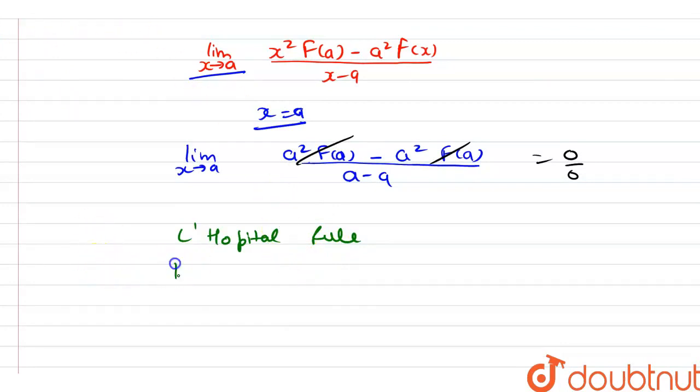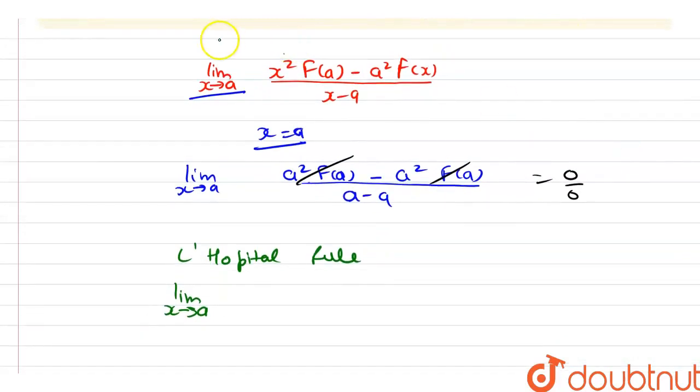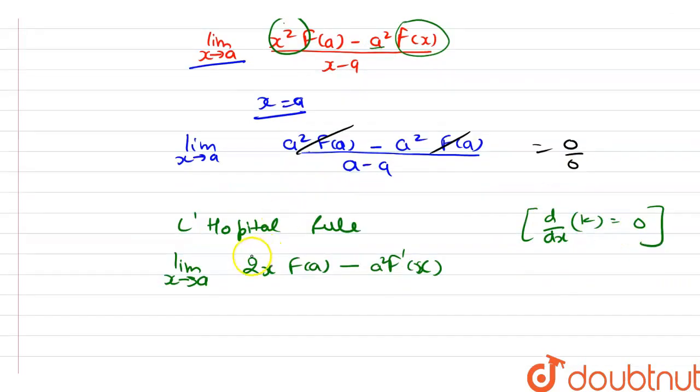So here, we have limit x tends to a. Now the differentiation of x square will be 2x and here f(a) because it is a constant, minus the differentiation of f(x) here is f'(x) times a squared because a squared here is a constant.